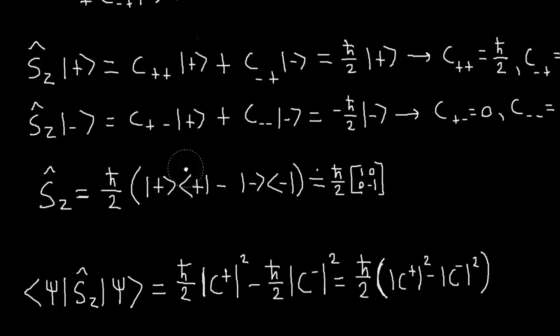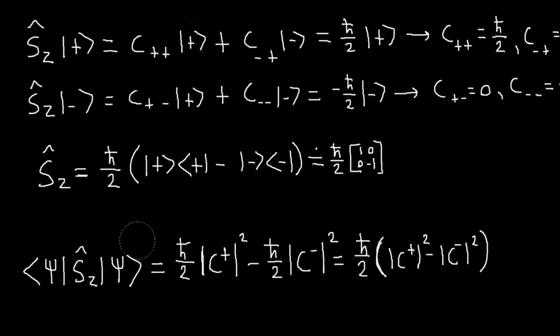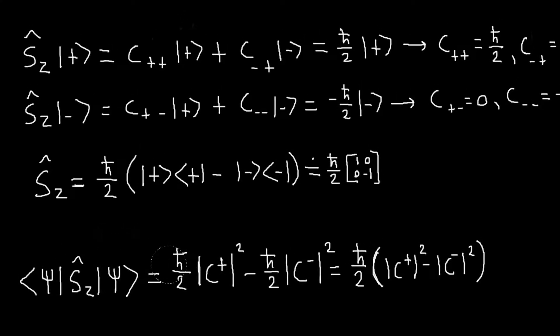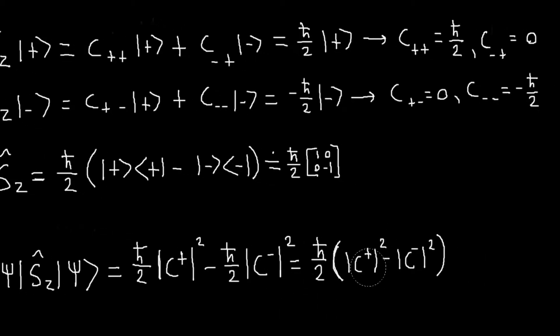And then the last thing is the expectation value. So in a general state, what is the expectation value of the z component of the angular momentum? Well, we worked that out last time, it's just the probability of measuring h-bar over two times h-bar over two times the probability of measuring minus h-bar over two times minus h-bar over two. And yeah, so we get this.